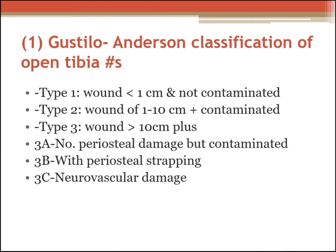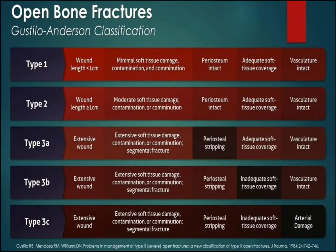We'll start with the Gustilo-Anderson classification of open tibial fractures. There are three types: Type 1 is where the wound is less than 1 centimeter and is not contaminated. Type 2 wound is 1 to 10 centimeters and is contaminated. Type 3A is where the wound is greater than 10 centimeters with no periosteal damage but is contaminated. Type 3B is more than 10 centimeters with periosteal stripping, and Type 3C is greater than 10 centimeters with neurovascular damage.